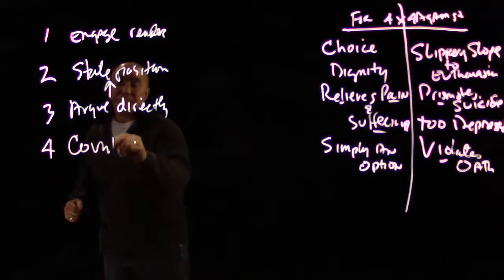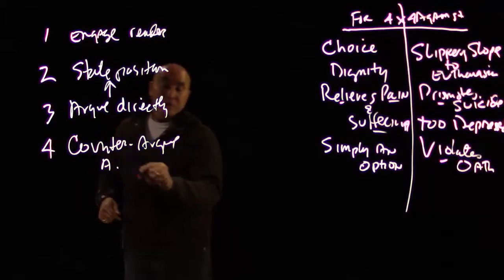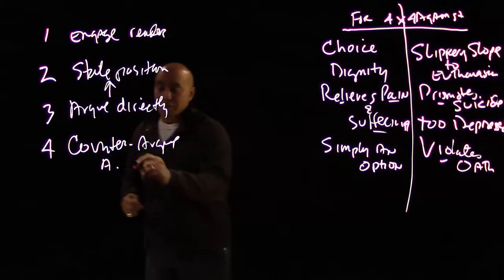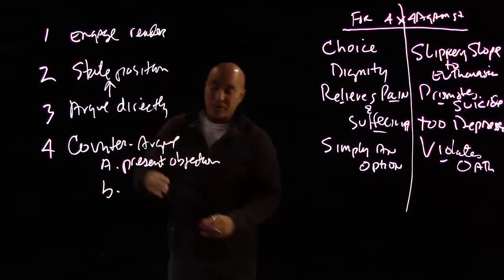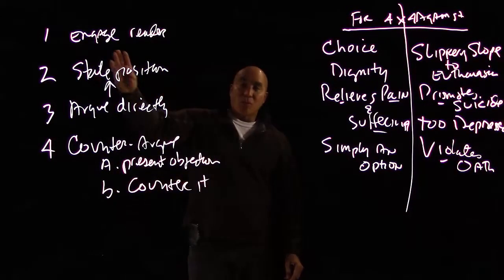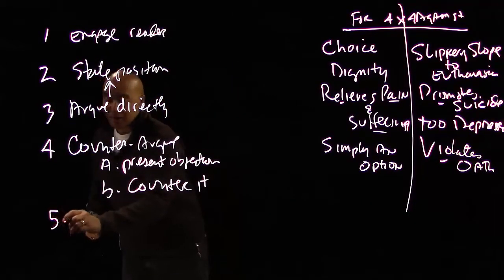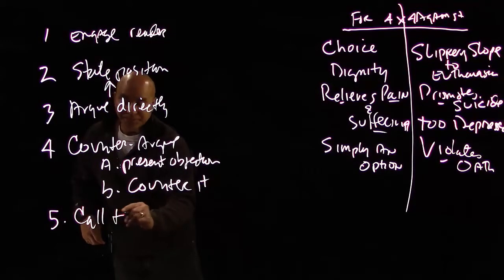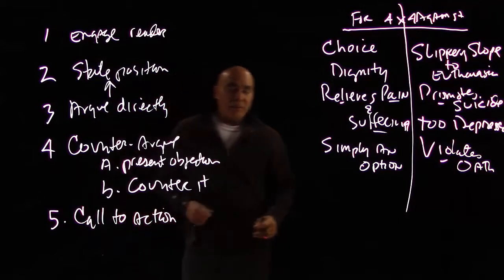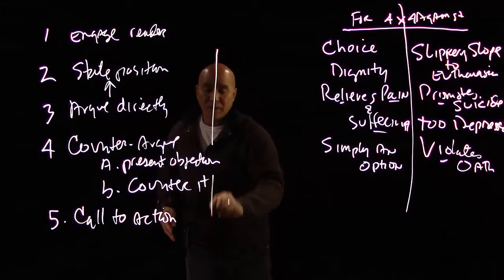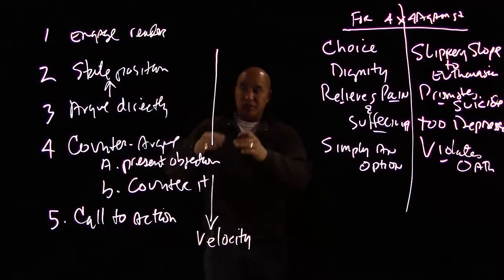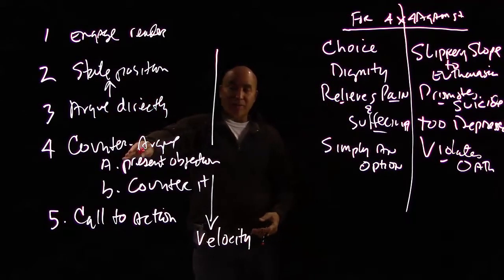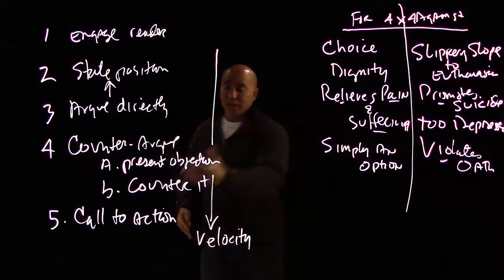Four is the counterargument, which has two parts: first, you yourself fully and fairly present the objection or question; second, you counter it. Five — and remember, this is not a conclusion — this is a call to action. The pattern has velocity: engage the reader, state the position, argue directly, counterargue, present the objection, counter it, then tell readers what to do or where to go from here.